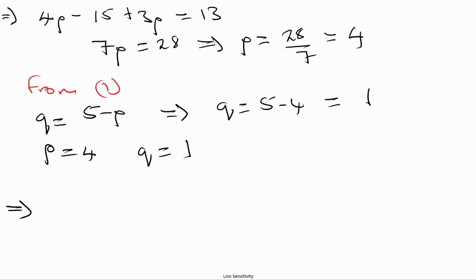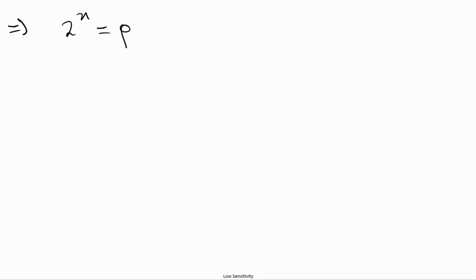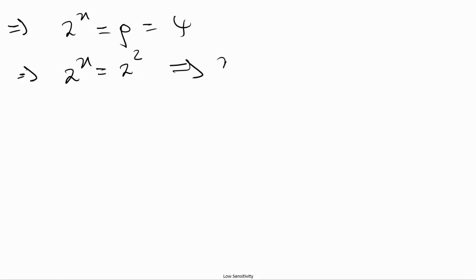We haven't yet solved for x and y. We know that 2^x = p and 3^y = q. For the first one: 2^x = p = 4. We can express 4 as a power of 2, so 2^x = 2^2. Therefore x = 2.